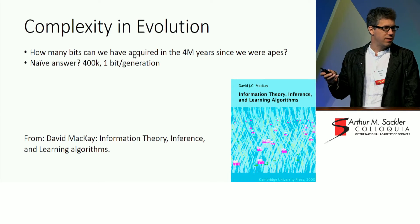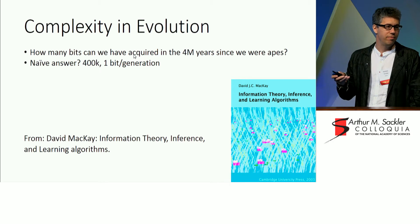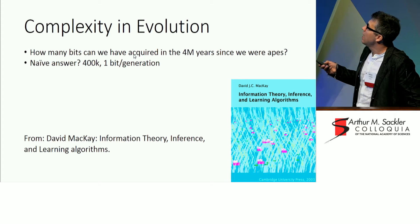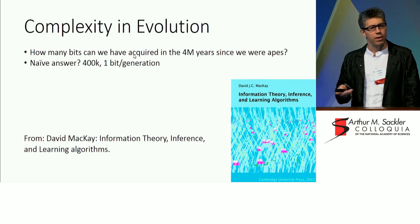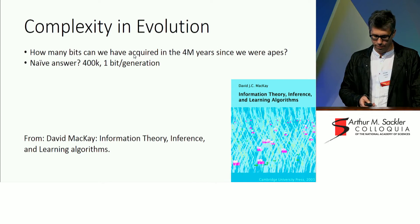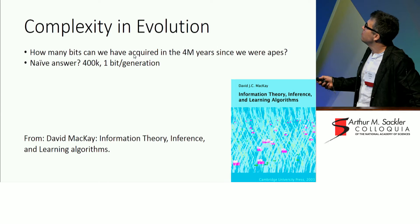You can say, how many bits can we acquire in about 4 million years since we were apes? And there's a naive answer, which is, well, there's about 400,000 bits because we can only get about one bit per generation.